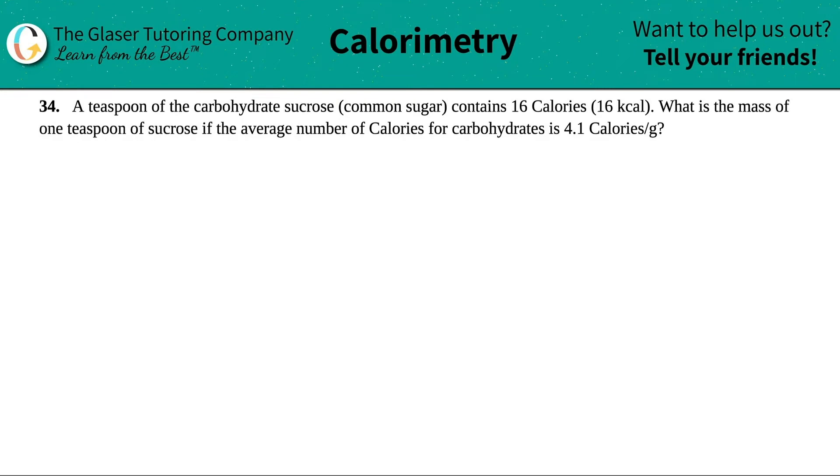Number 34, a teaspoon of the carbohydrate sugar, which is common sugar, contains 16 calories, aka 16 kilocalories. What is the mass of one teaspoon of sucrose if the average number of calories for carbohydrates is 4.1 calories per gram?